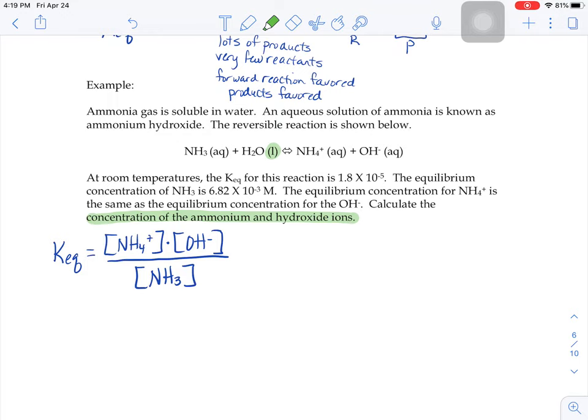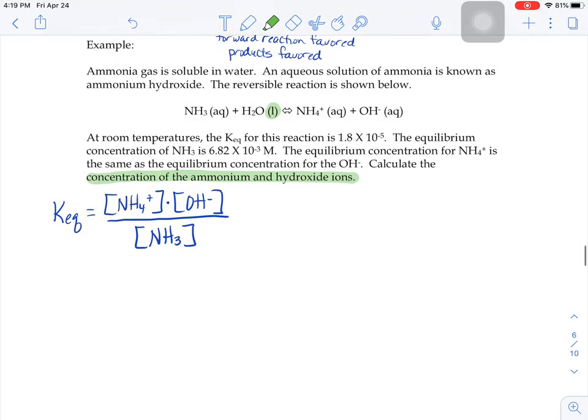Let's start substituting in everything that we know. It tells us that the KEQ is 1.8 times 10 to the negative 5, so I'm gonna put that in the KEQ spot. We also know that the equilibrium concentration of the NH3 is 6.82 times 10 to the negative 3rd, so I'll put that down here.